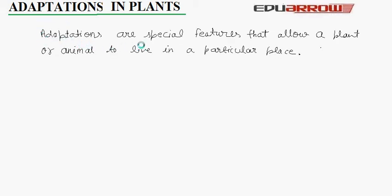Plants have adaptations to keep them survive — that is, to live and grow in different areas. There are different plants in different areas because different areas have different water, minerals, sunlight, air, soil, weather and other conditions. So plants found in different places are different.